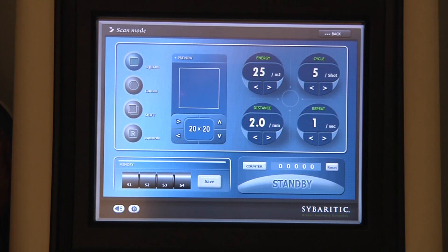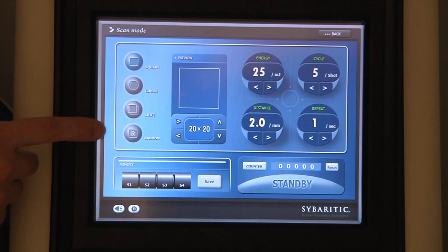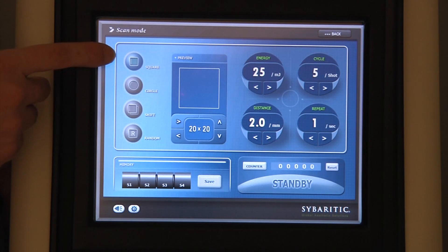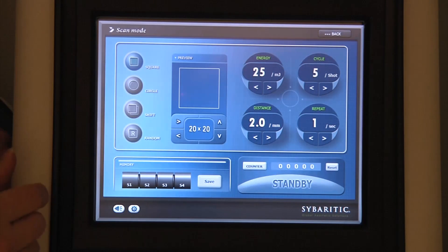In the scanning mode of operation, we have several parameters under our control. One is we can change the size and the shape of the scanning area. We're currently set to a square, which we can increase to a maximum of 20 millimeters by 20 millimeters.